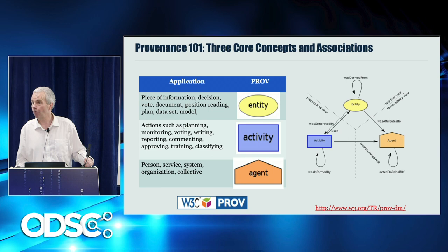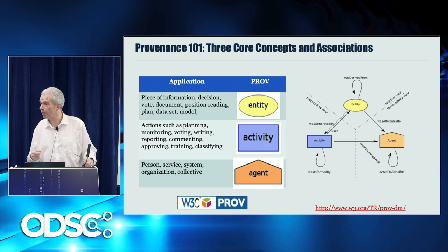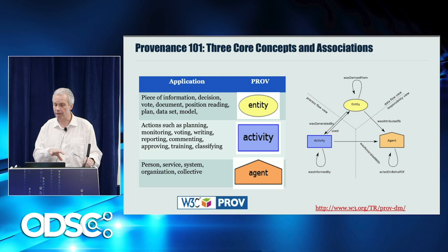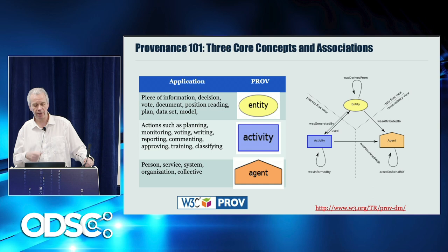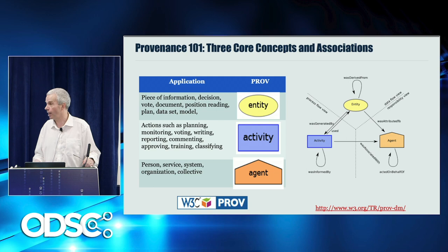There are only three concepts in PROV: a notion of entity, a notion of activity, and a notion of agent. An entity may be a piece of information — a dataset, a document, a decision, a training set, or a model being built through training. Activities are things that are happening: you can plan, monitor, vote, write a document, train a model, or classify. Agents can be people, services, systems, organizations, or a combination of those.